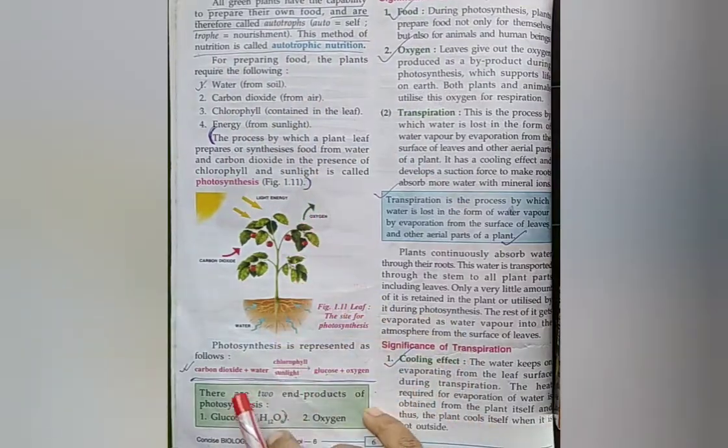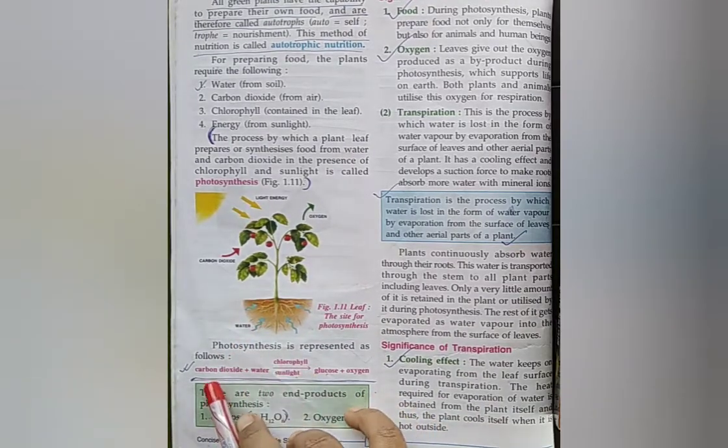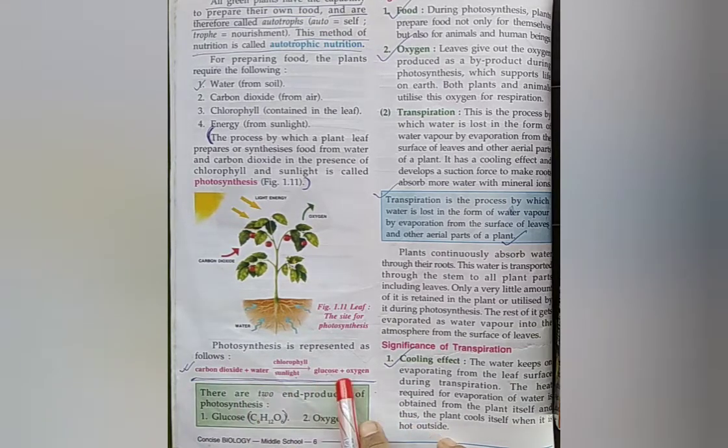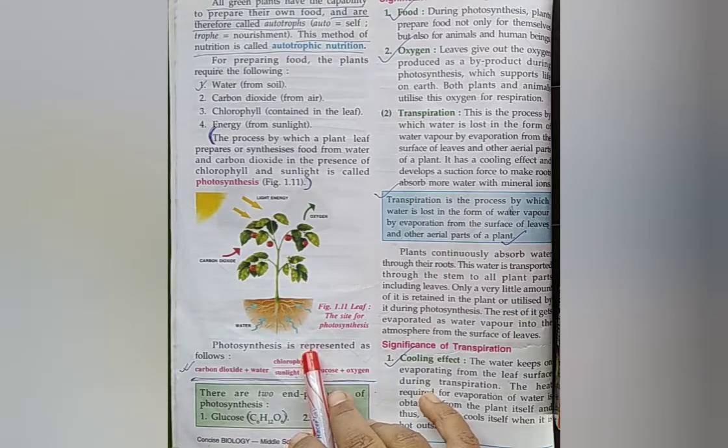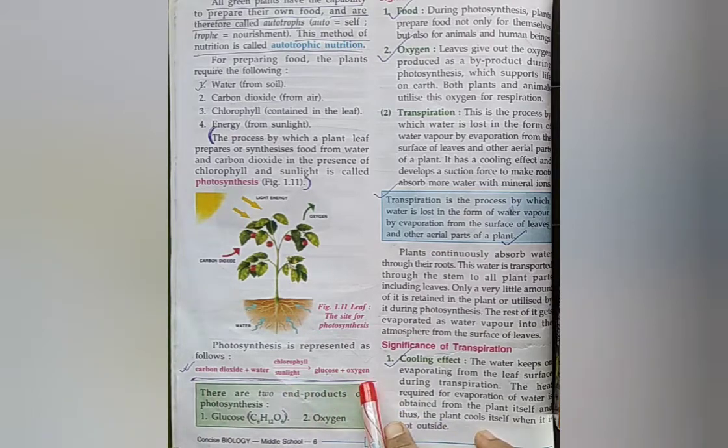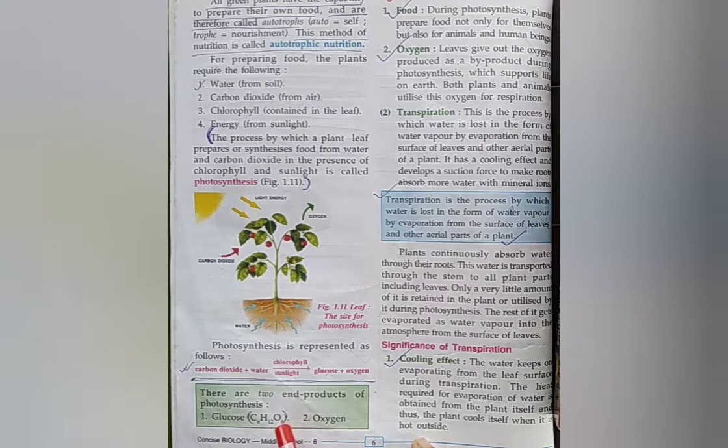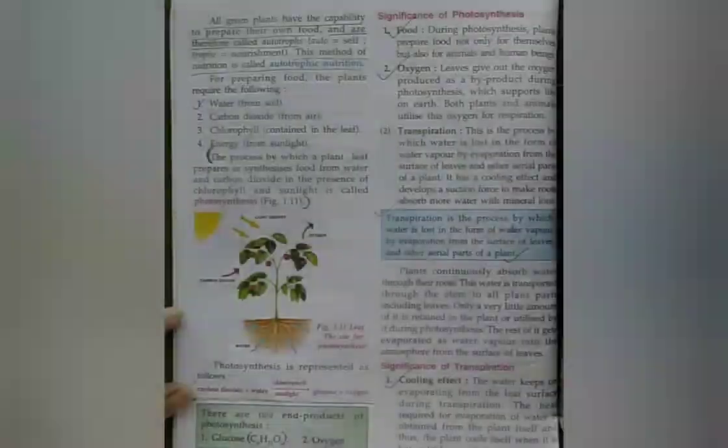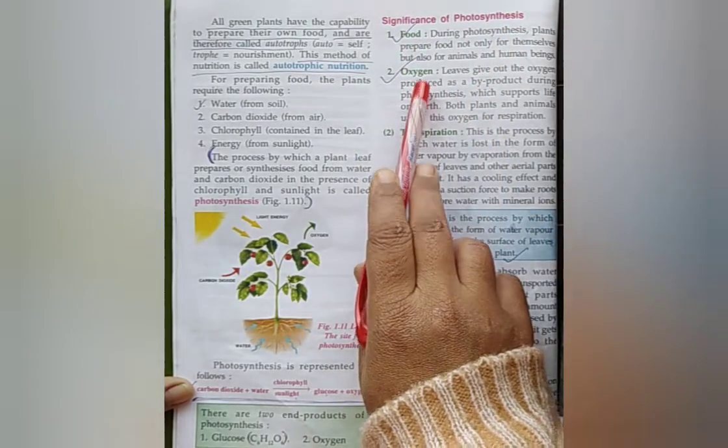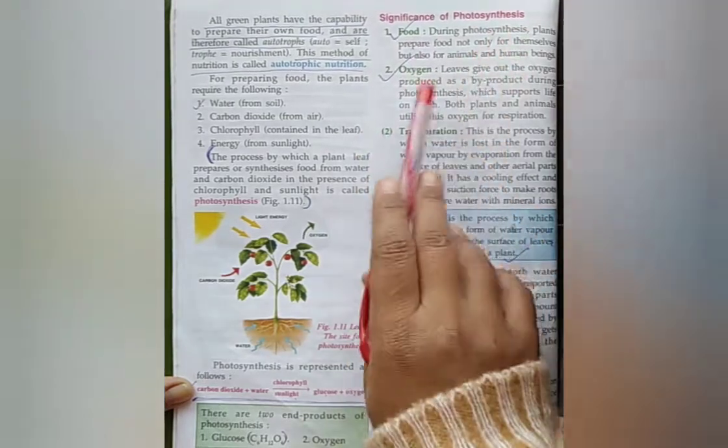Photosynthesis can be represented as: Carbon dioxide plus water, chlorophyll and sunlight, produces glucose plus oxygen. If the question asks how to represent photosynthesis shortly, this is the answer. Products of photosynthesis: Write the name of the two products of photosynthesis. Glucose and oxygen. Write the significance of photosynthesis: Food and oxygen.